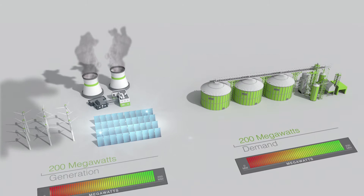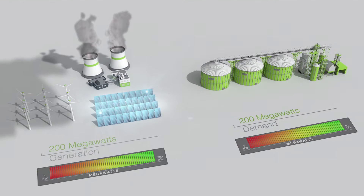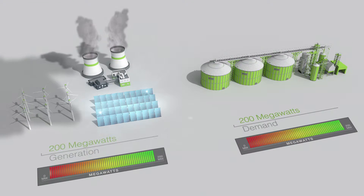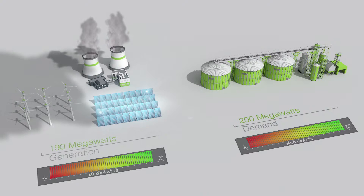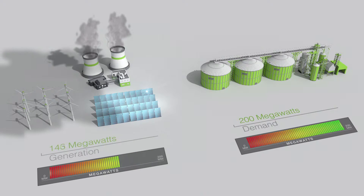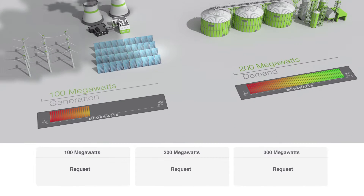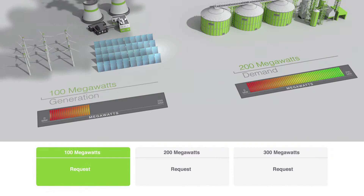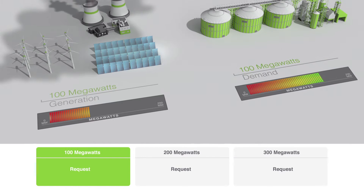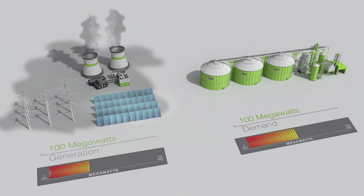In real-time, power demand and power generation need to be balanced at each point in time. In Europe, the power system faces imbalances between demand and generation, which continues to challenge power utilities and grid operators.